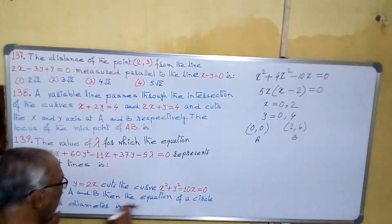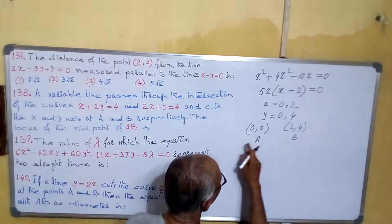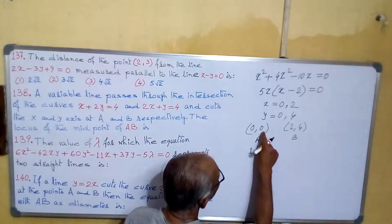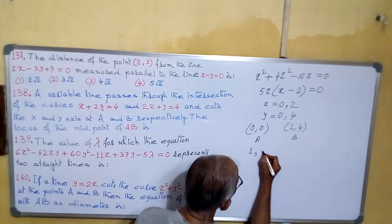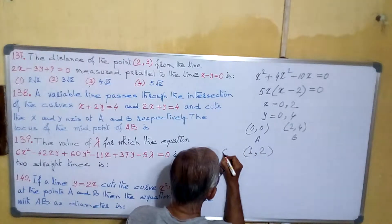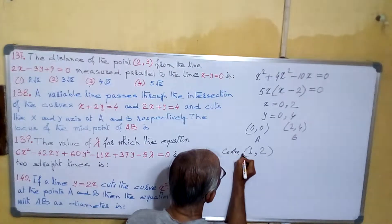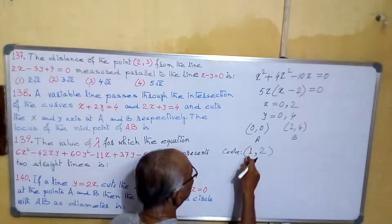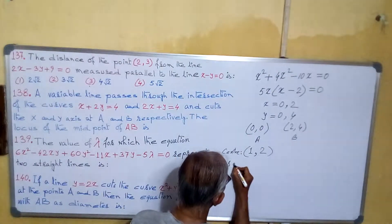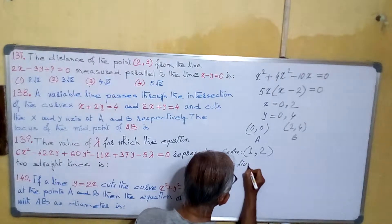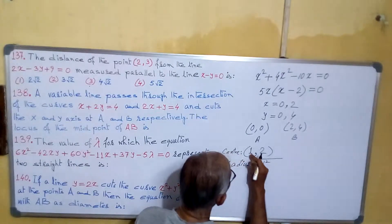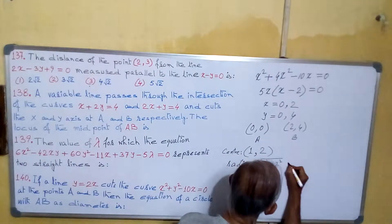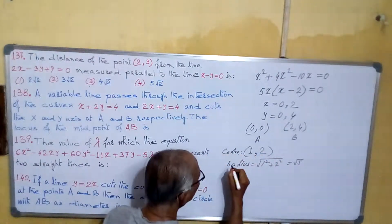So AB is the diameter. Then its midpoint will be the center. The midpoint is (0+2)/2 = 1 and (0+4)/2 = 2. So center is (1, 2). The radius equals to the distance from center to one end: root of (1−0)² + (2−0)² equals root of 1 + 4, which is root 5.